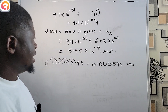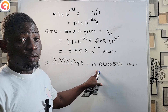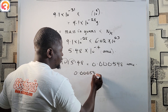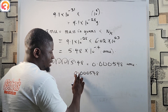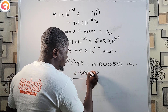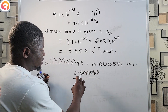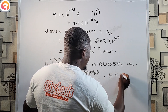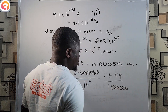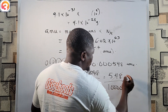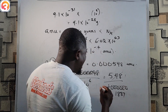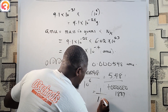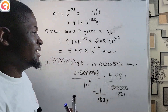Having this value in AMU as a decimal, we can convert it to a fraction. We have 0.000548, and dividing by 10⁻⁶ clears the decimal, giving 548 over 1,000,000. Reducing this fraction to its lowest terms gives approximately 1/1837. So the mass of an electron in atomic mass units is 1/1837.